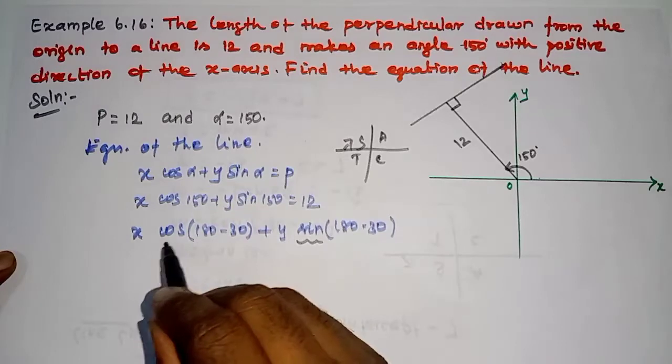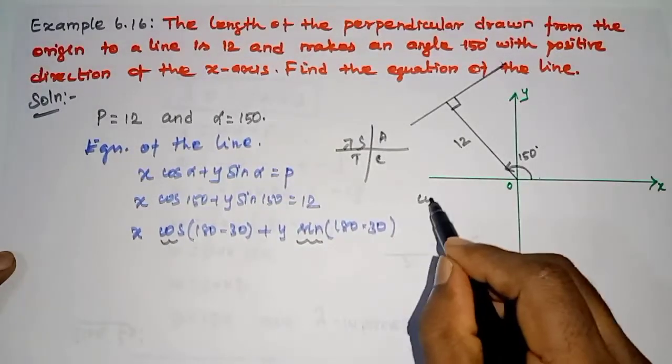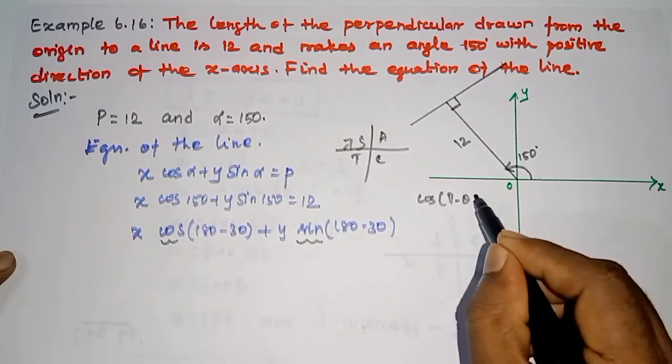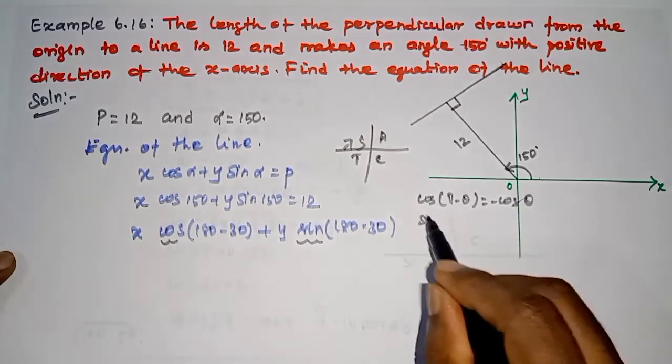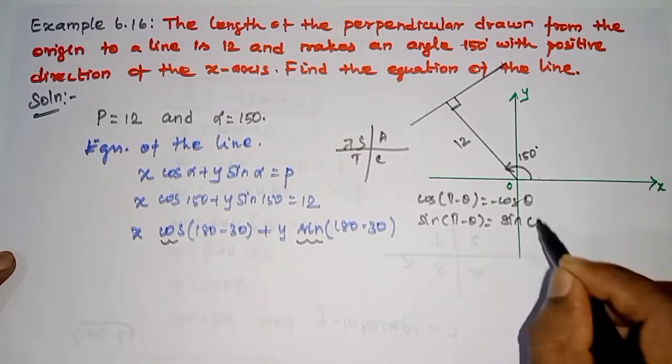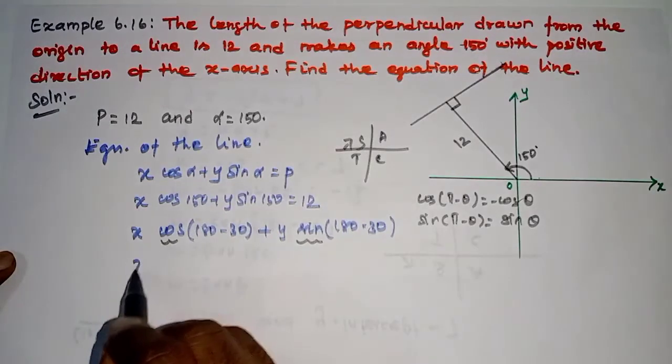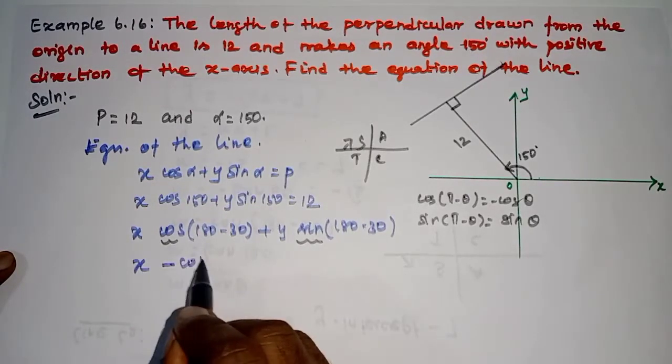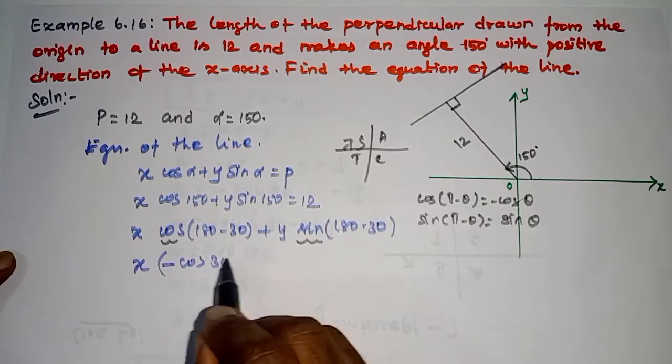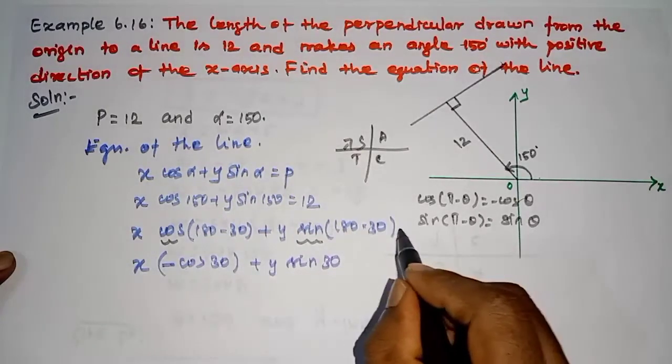So this is positive, but cos is negative. cos of pi minus theta is minus cos theta, but sin of pi minus theta becomes sin theta. So, x into minus cos 30 degrees plus y sin 30 degrees.